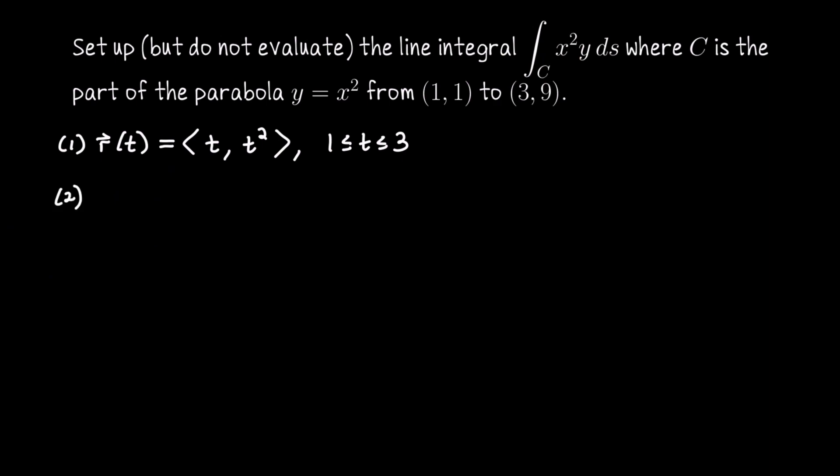Plugging that into the integrand, we need to square the first coordinate and multiply it by the second coordinate. If I think of this integrand as the function f, evaluating f along the curve gives us t² times t², which is t⁴.